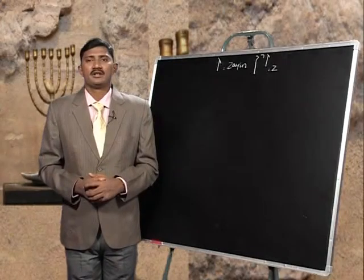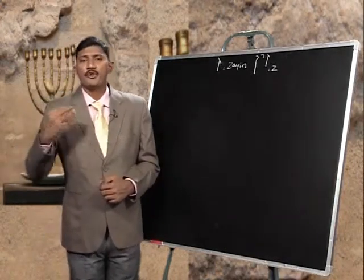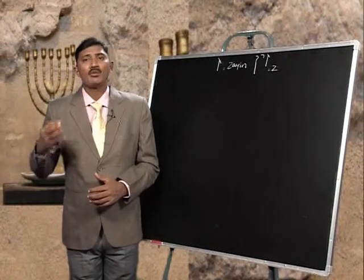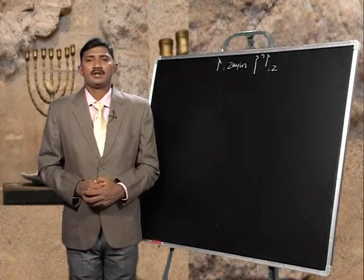The fifth letter is He, whose picture is a window. It talks about expression and breathing — aur saans lena. Its numerical value is number 5. Aur us ki jo ginti sankhya hai wo hai number 5.